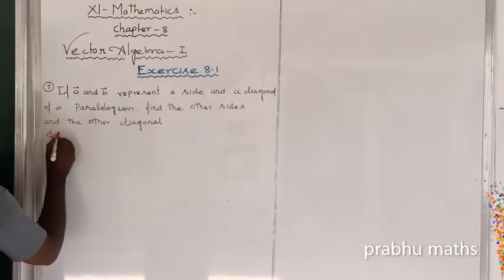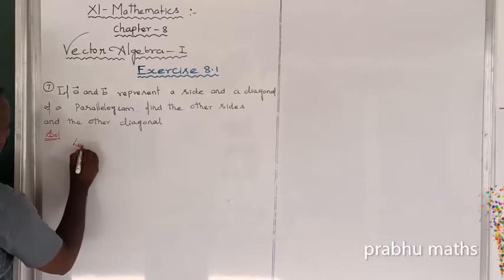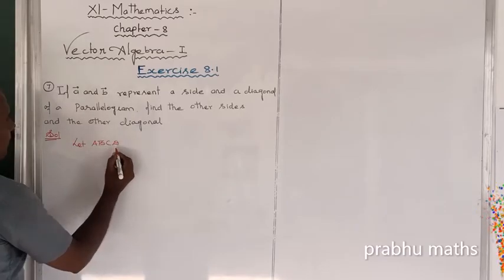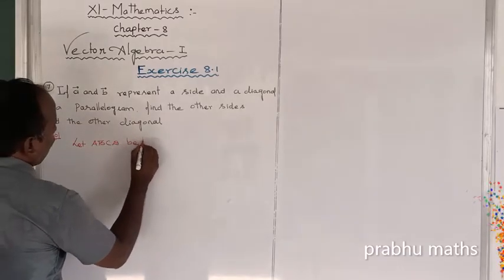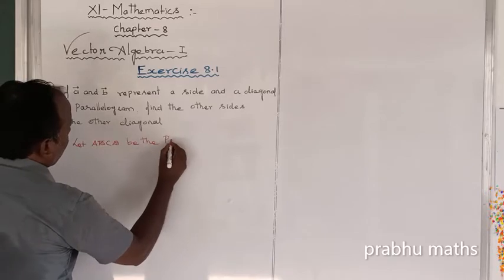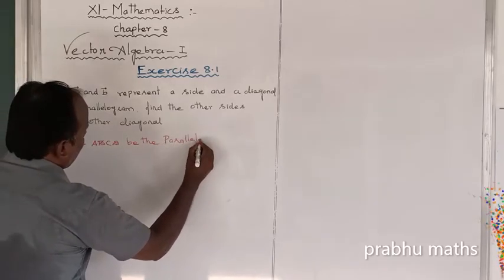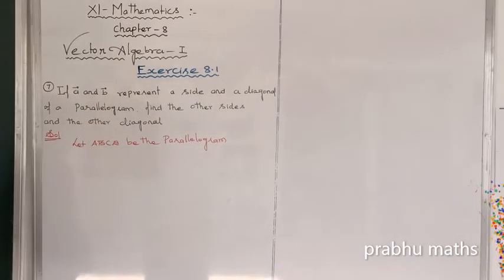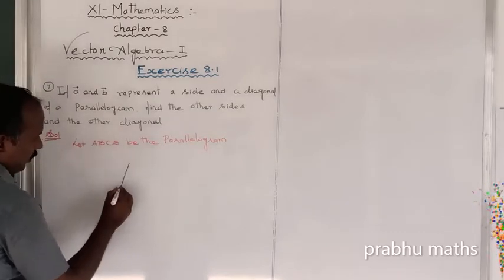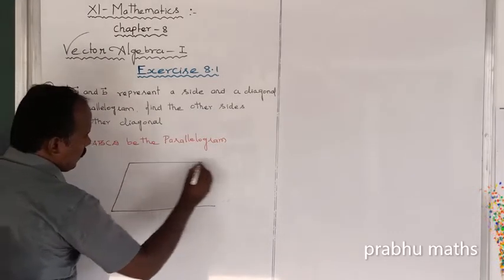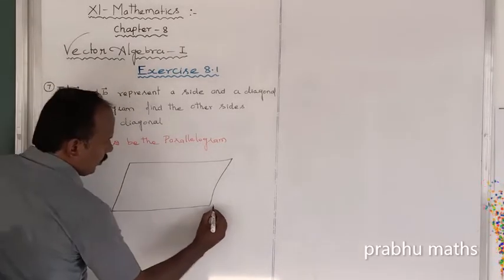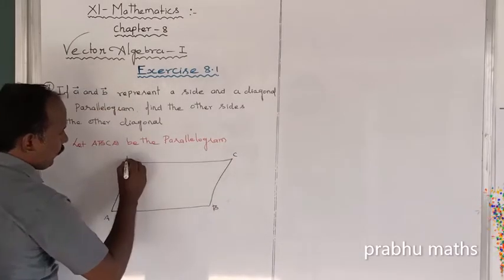First of all, let us consider. Let A, B, C, D be the parallelogram. So the parallelogram is A, B, C, D.